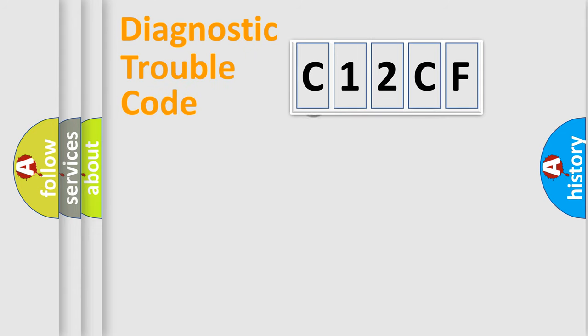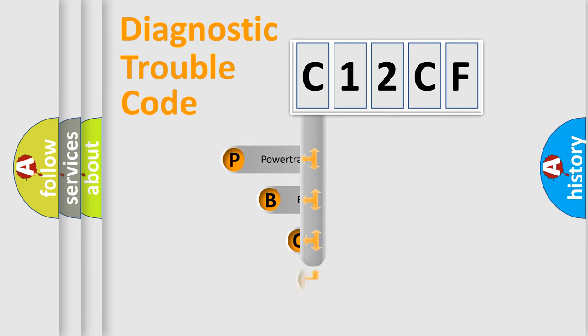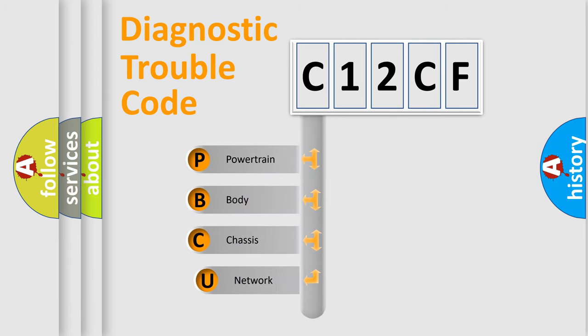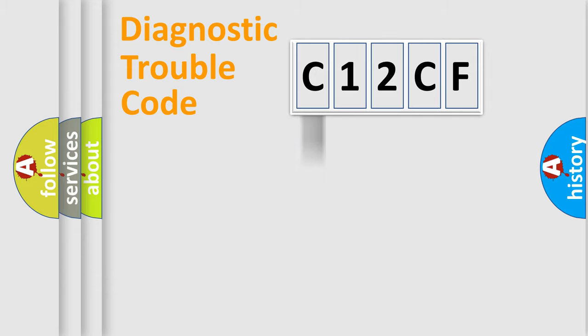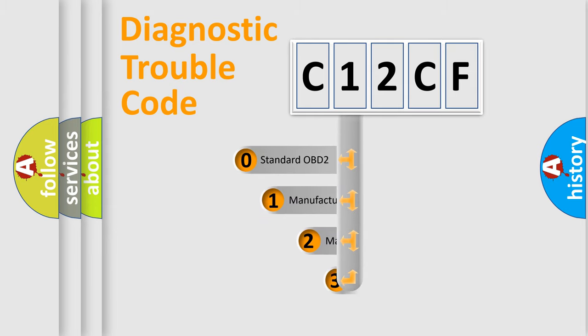First, let's look at the history of diagnostic fault code composition according to the OBD2 protocol. We divide the electric system of an automobile into four basic units: powertrain, body, chassis, and network. This distribution is defined in the first character of the code.